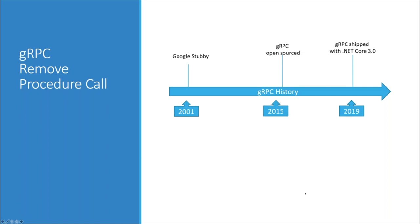In a nutshell, RPC is a call to a function running on a remote server. We deal with a local function that has the same signature as a remote function — we call it locally, but transparently we're passing the arguments to a function executed on a remote server. For the past 15 years, Google worked with this protocol internally under a project called Stubby — an RPC framework that could handle internet-scale billions of requests per second. The framework was open-sourced in 2015 under the name gRPC.